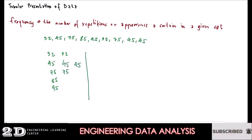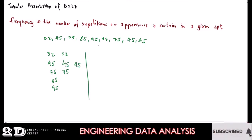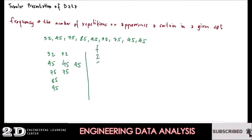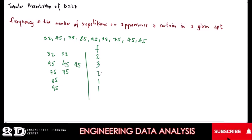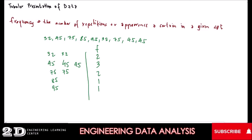If we are going to write the frequency: for 32, the frequency is 2; for 45, it is 3; for 75, it is 2; and we have 1 and 1 for 85 and 95 respectively. So that is what we mean by frequency.